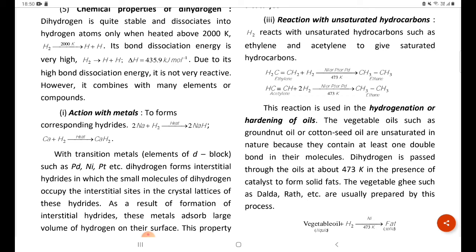Vegetable oils like groundnut oil or cottonseed oil are unsaturated in nature because they contain at least one double bond in their molecules.